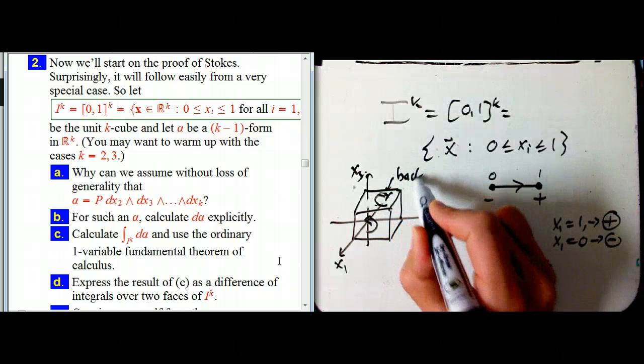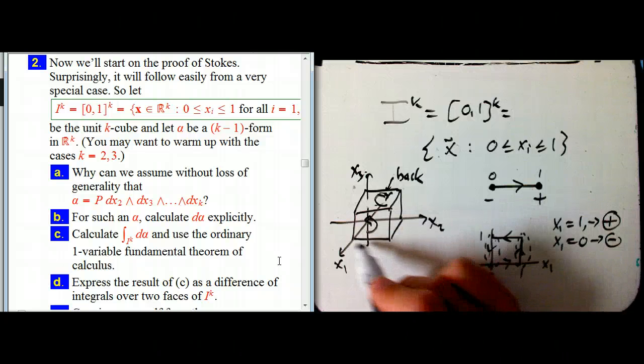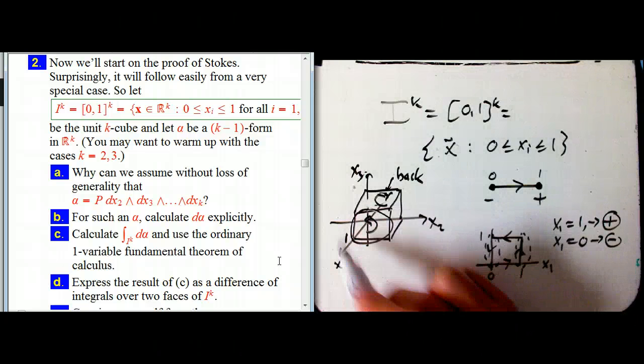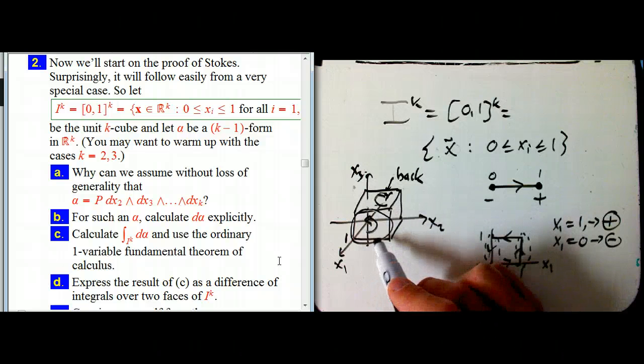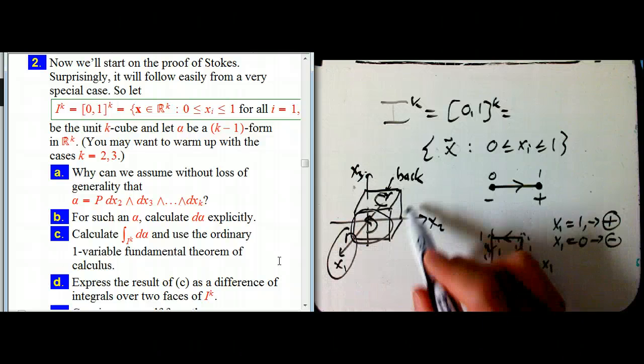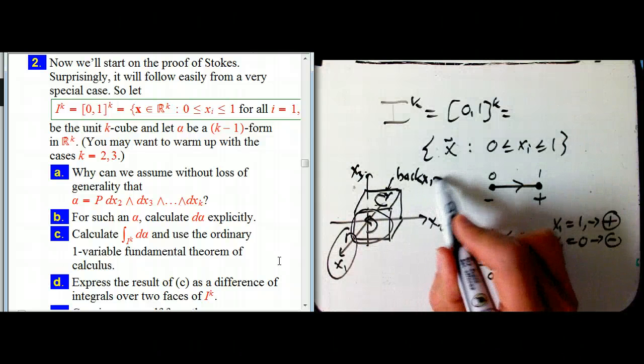That's going to be going counterclockwise in the front face, and clockwise in the back face. Now it's not really completely clear, but that's on the back. So again, it's the normal orientation you'd expect for a unit square when x_1 equals one, the opposite when x_1 equals zero.